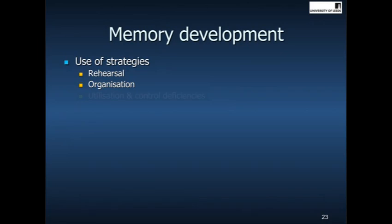Children under the age of seven or eight do not spontaneously use this strategy at all — it doesn't occur to them. And when they do use it, they don't use it very effectively because they don't use very sensible categories in which to chunk the information. A utilisation deficiency is when children do not use the strategy at all, and a control deficiency is when they start to use it but they don't use it very effectively.